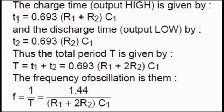T1 is for high output and T2 is for low output. T1 equals 0.693 times (R1 plus R2) times C1, and T2 equals 0.693 times R2 times C1.